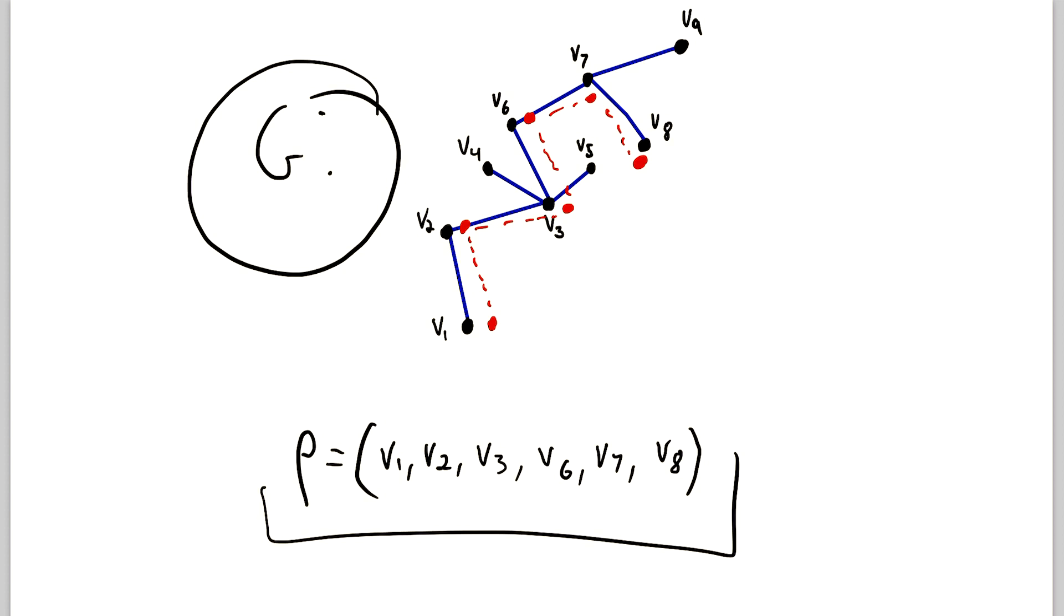But what makes it a path? Well, just like with trails and walks, the consecutive vertices in the sequence are adjacent in the graph. So all of these consecutive vertices, we can see they are joined by an edge in the graph G. So when we started at V1, for example, we could only go to V2. We can't go to V3 because it's not adjacent to V1. That is, we have to travel through edges.